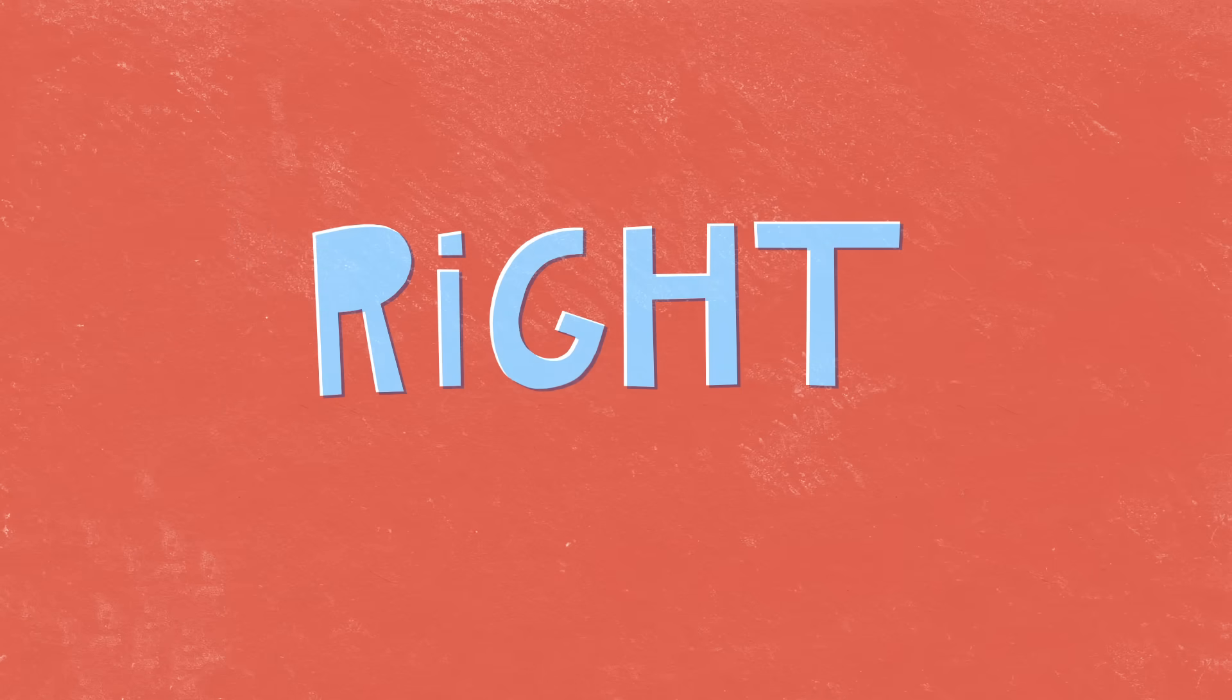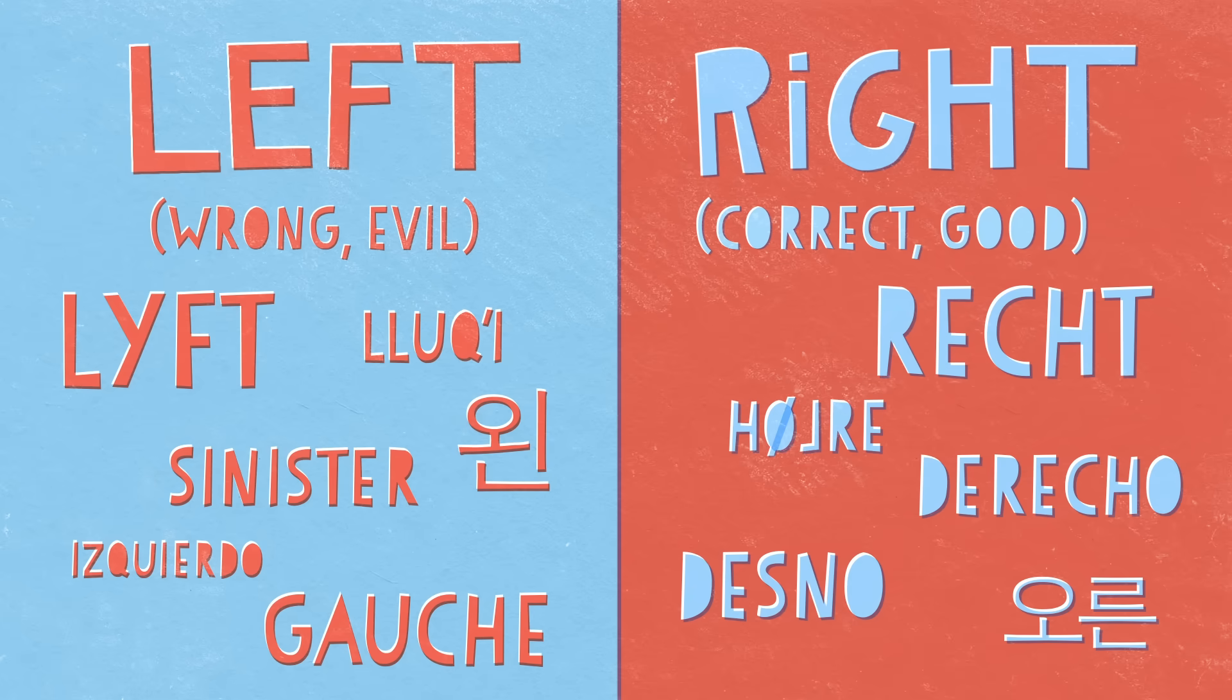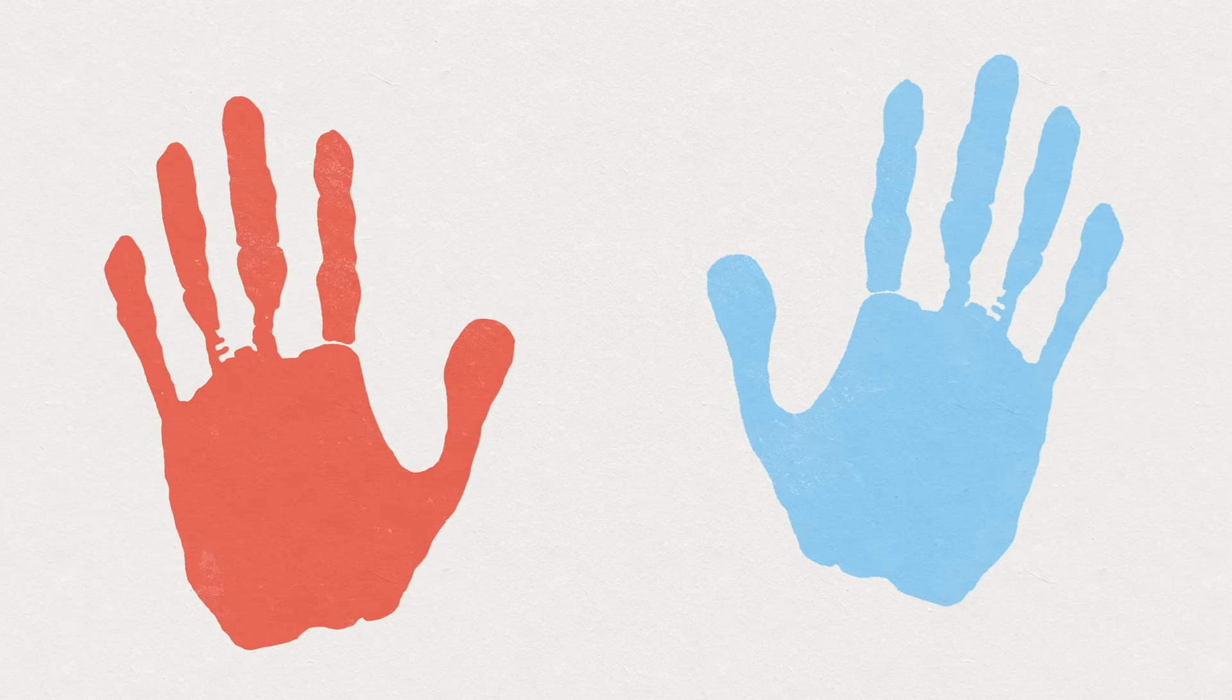Even the word for right also means correct or good, not just in English, but many other languages, too. But if being left-handed is so wrong, then why does it happen in the first place?